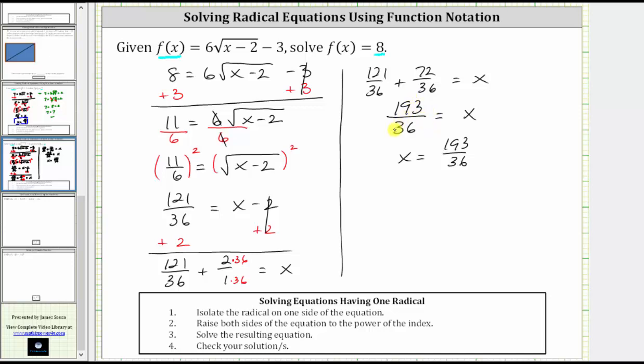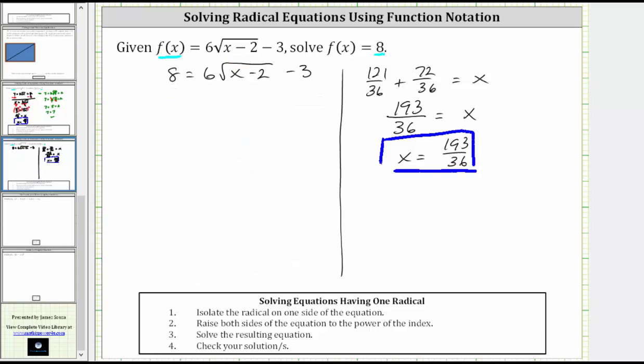This is our solution, but let's actually verify it does satisfy the equation by going back to the original equation here and substituting 193/36 for x. Performing this substitution gives us 8 = 6√(193/36 - 2/1) - 3.